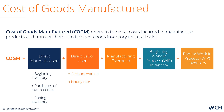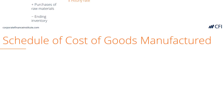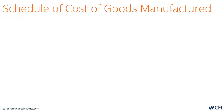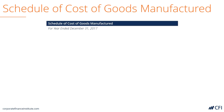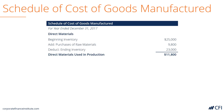Let's look at an example to see how this works. Here's a schedule for cost of goods manufactured. A company with a fiscal year end of December 31st has direct materials with a beginning inventory of 25,000. It then purchases 9,800 more raw materials, and we deduct the ending inventory of 23,000, so the direct materials used in production is 11,800.